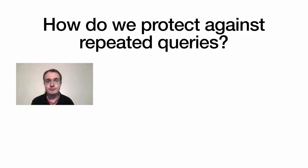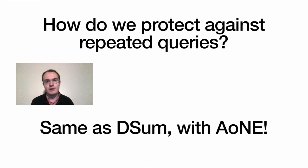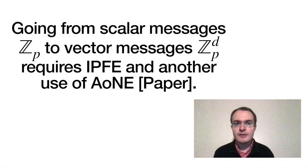Another issue you run into is that of repeated queries, as we did earlier with DSum. Because encryption is again deterministic, so you can use the group structure to figure out the difference between two plaintexts from two ciphertexts for the same set of participants and the same label. Thankfully, it turns out AONE, which we had used for DSum, also helps here.